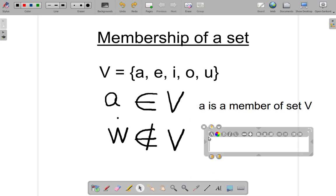And what this statement is saying is that W is not a member of set V.